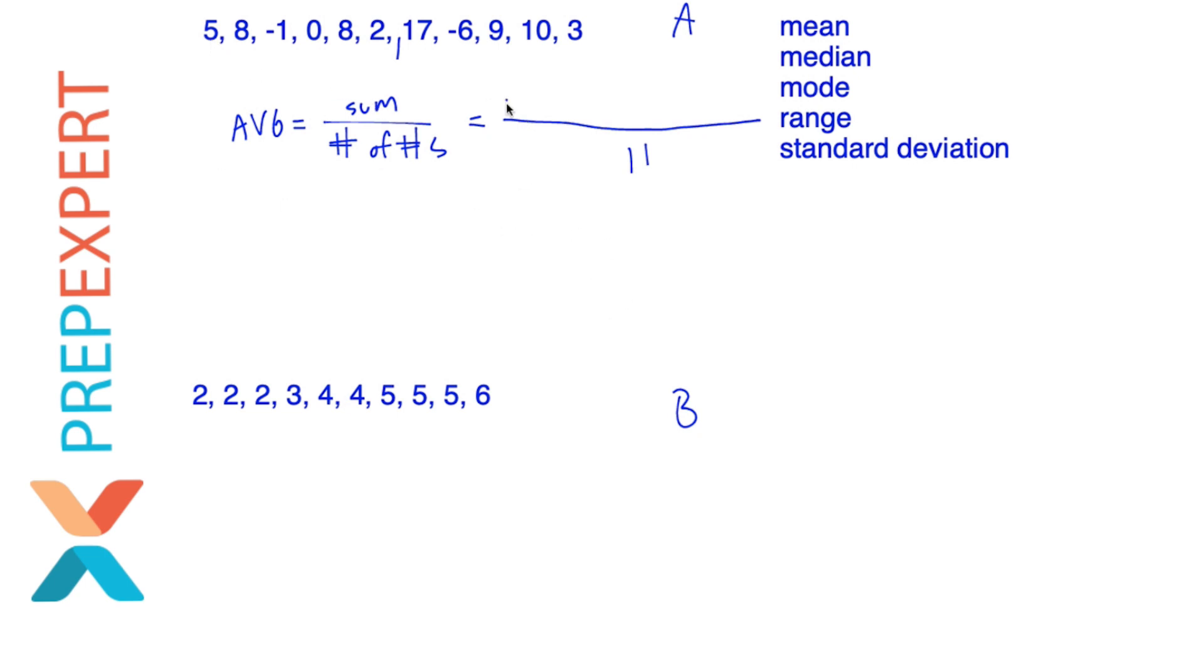And now I'm going to find their sum. Just add them together. Five plus eight minus one plus zero plus eight plus two plus 17 minus six plus nine plus 10 plus three.